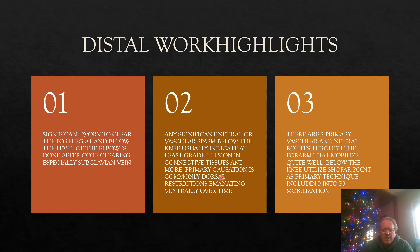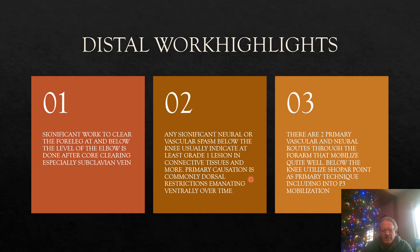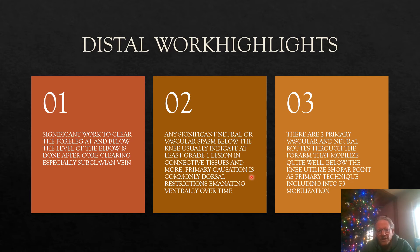The primary causation in anything below the knee is generally dorsal restrictions emanating from above — trauma patterns and other dysfunctions that are broader and work their way down. When they hit the knee over time, you can watch a trauma pattern restrict the scapula and the whole foreleg apparatus, whether cranial or caudal or both. When you look at the spasms in the soft tissue below the elbow, they tend to go more to the front of the leg or to the caudal leg, and those have different structures you'll work with.